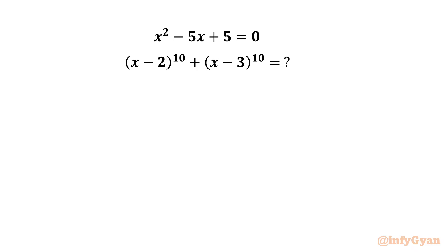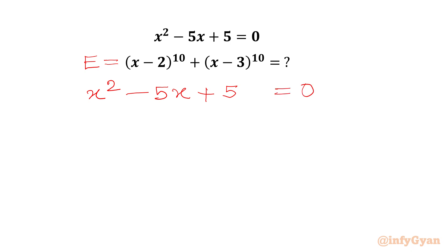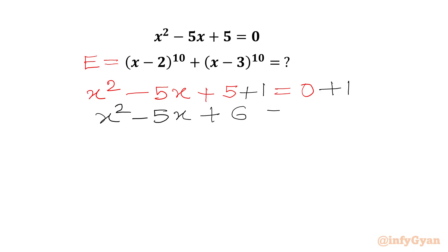Let us consider this required expression equal to E. Now I will write our given equation x² - 5x + 5 = 0. Let us add 1 to both sides. So LHS becomes x² - 5x + 6 and RHS will be 1.